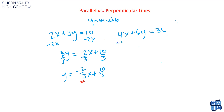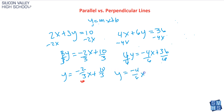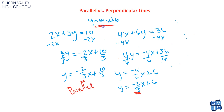Now solve the second equation for y. Subtract 4x from both sides to get 6y equals negative 4x plus 36. Divide everything by 6: y equals negative 4/6 x plus 6. Reduce the fraction — negative 4/6 simplifies to negative 2/3. Both slopes are exactly the same: negative 2/3. Therefore these two lines are parallel. If they're not in y equals mx plus b format, just get y alone and then compare slopes — same slopes means parallel, negative reciprocals means perpendicular, otherwise it's neither.